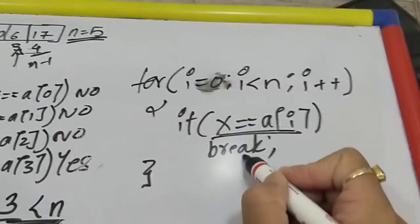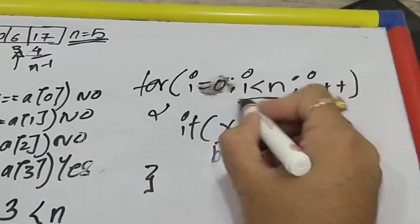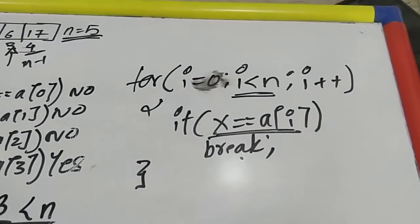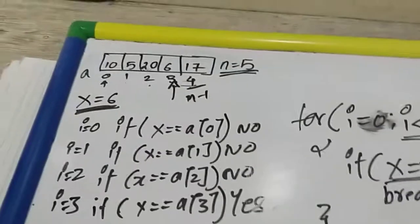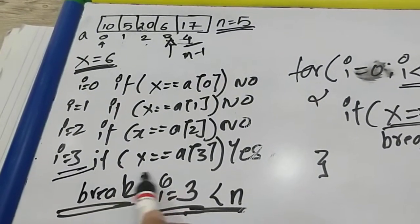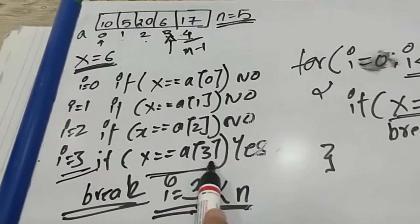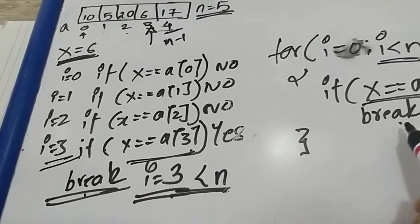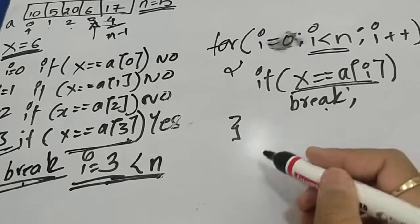So break will execute. After this for loop, what is the value of i? Three.